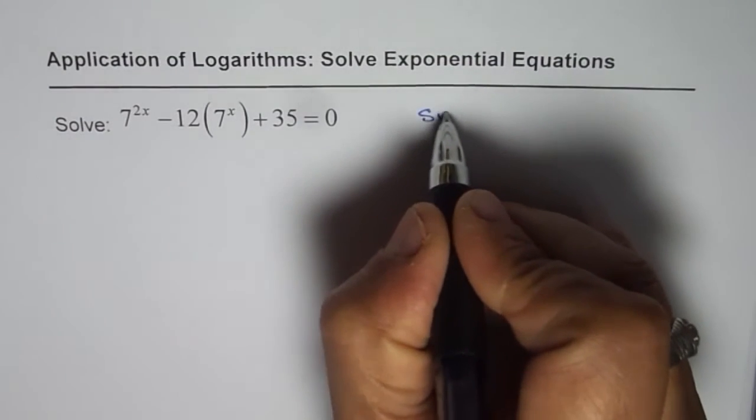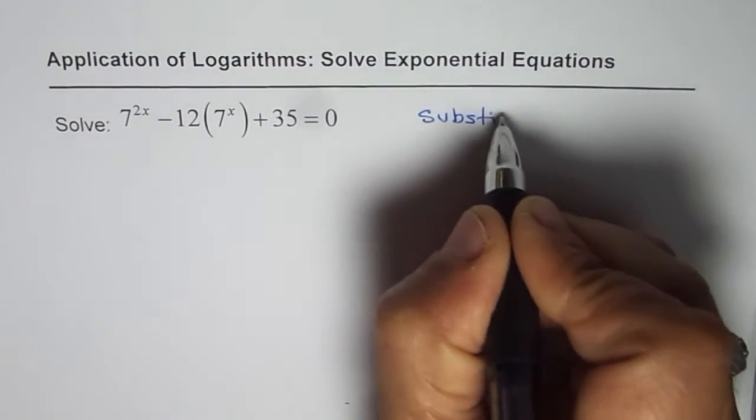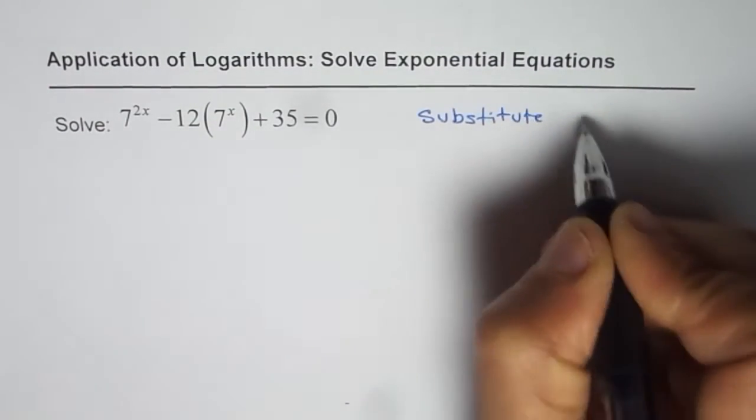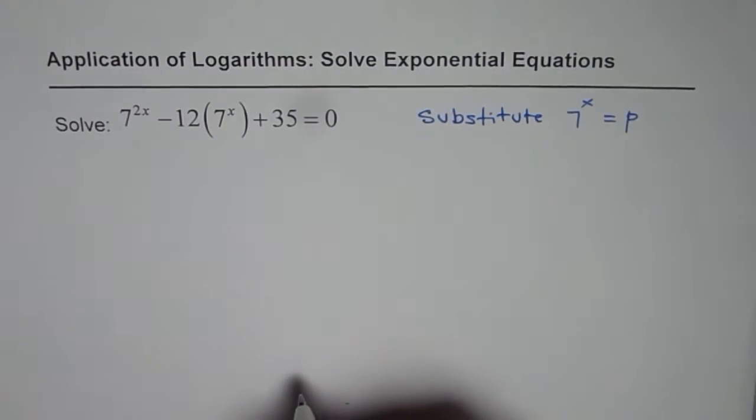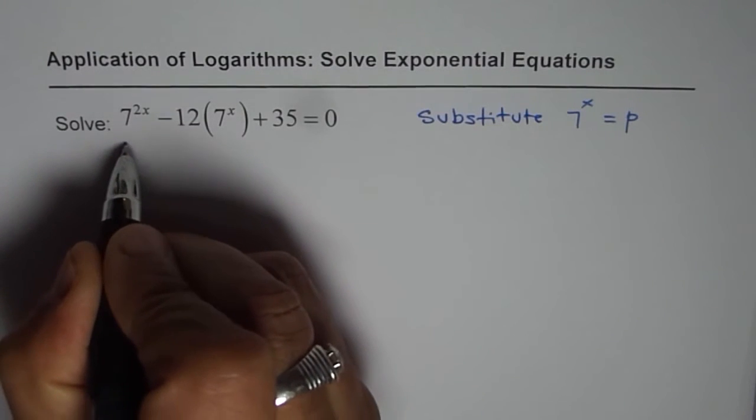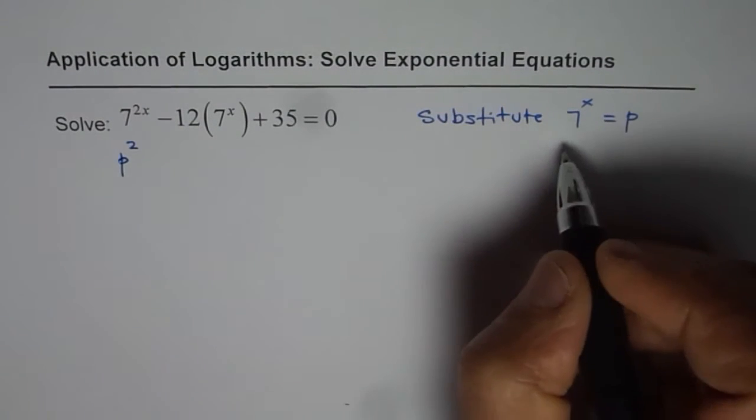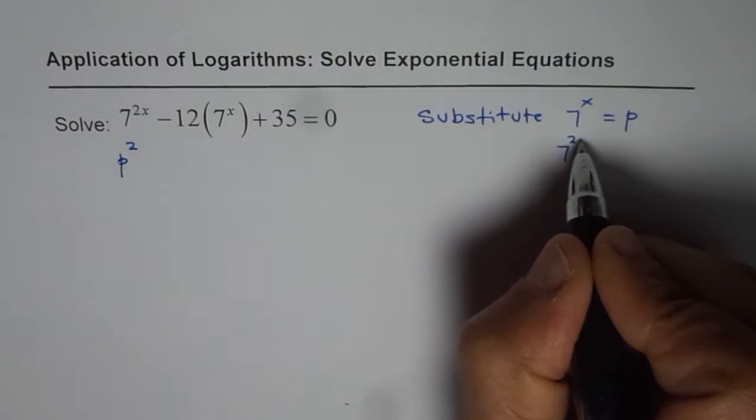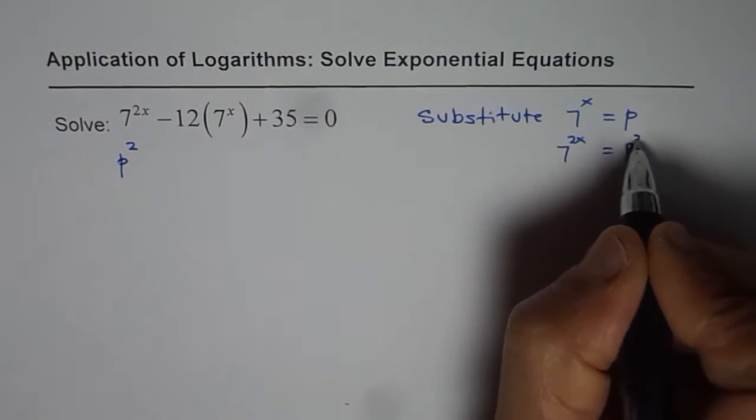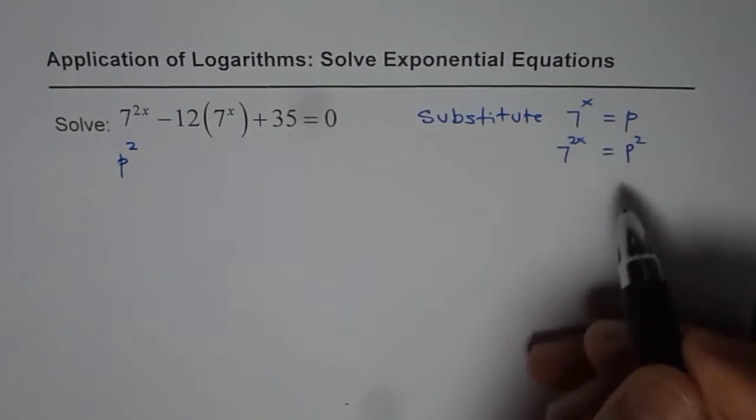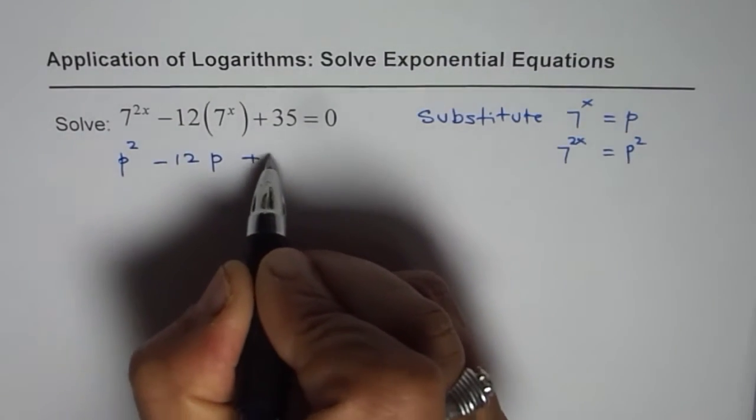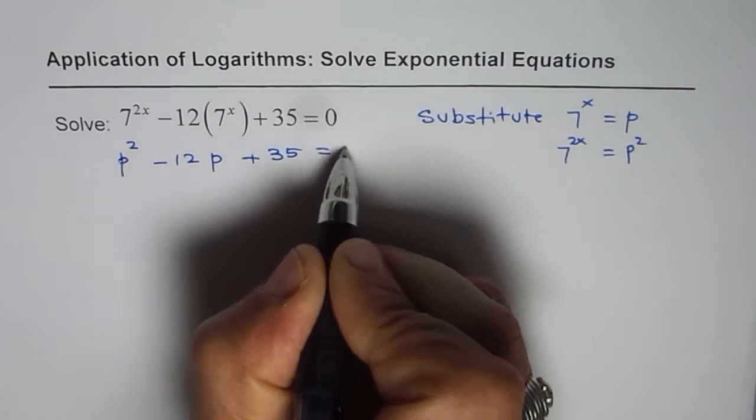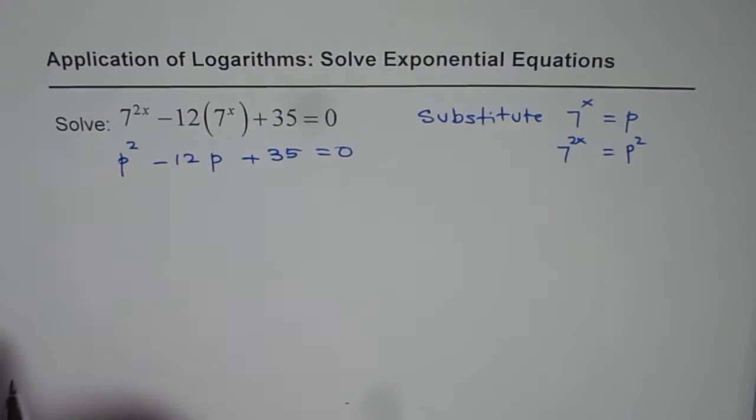Now if I substitute 7 to the power of x as let's say p, then what happens? In that case I get p squared. 7 to the power of 2x will be p squared, that means 7 to the x whole squared will be p squared. So p squared minus 12p plus 35 equals to 0. Now that's a simple quadratic equation which you can solve.